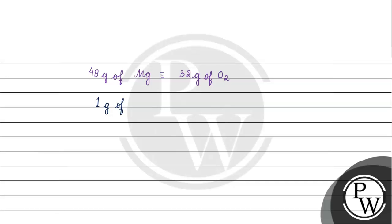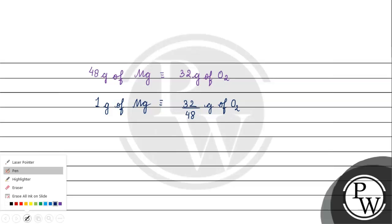For 1 gram of magnesium, we have 32 by 48 grams of oxygen. So we have 0.667 grams of oxygen, but the oxygen available is 0.56 grams of oxygen.